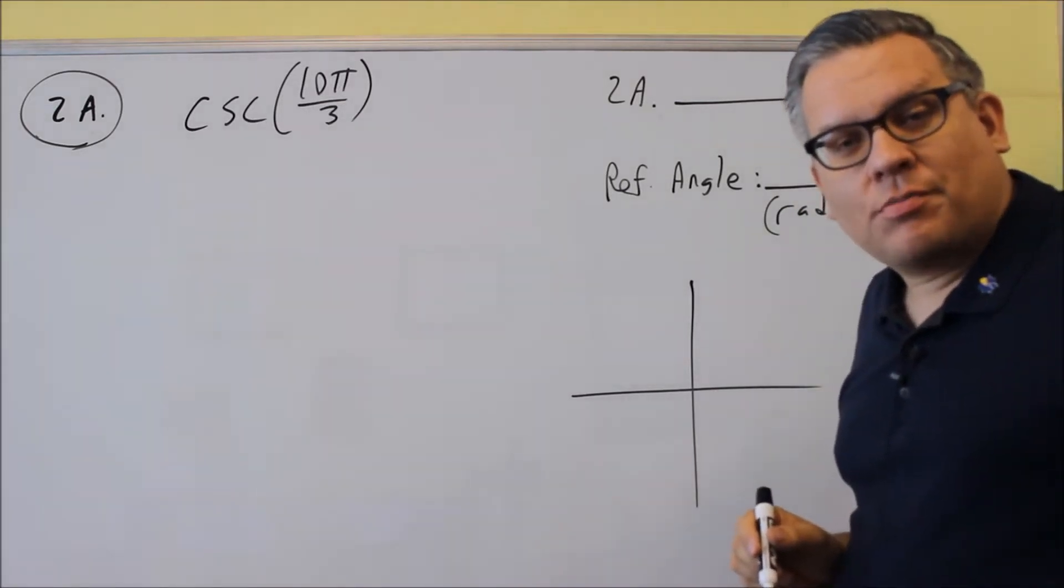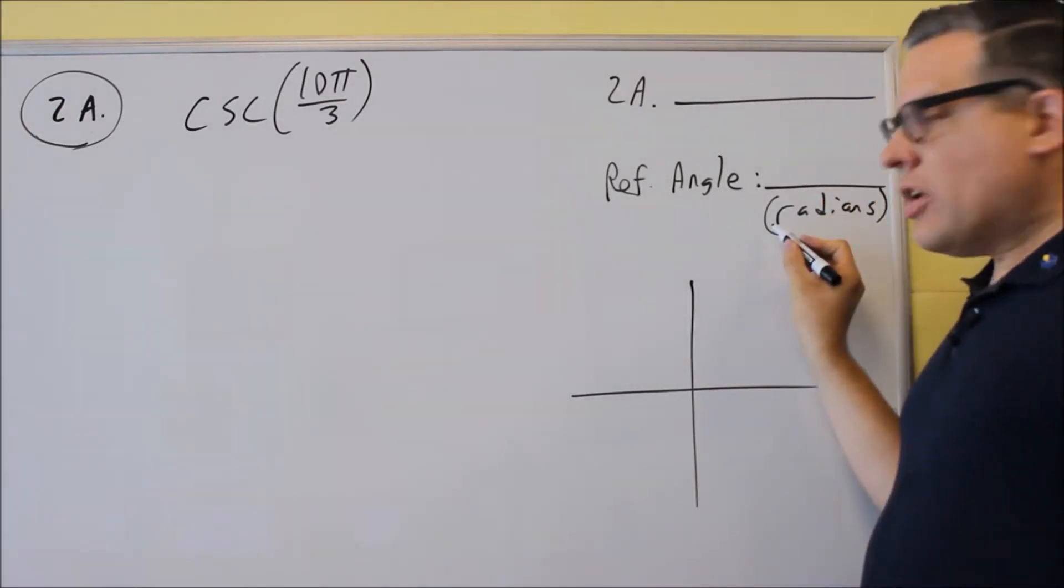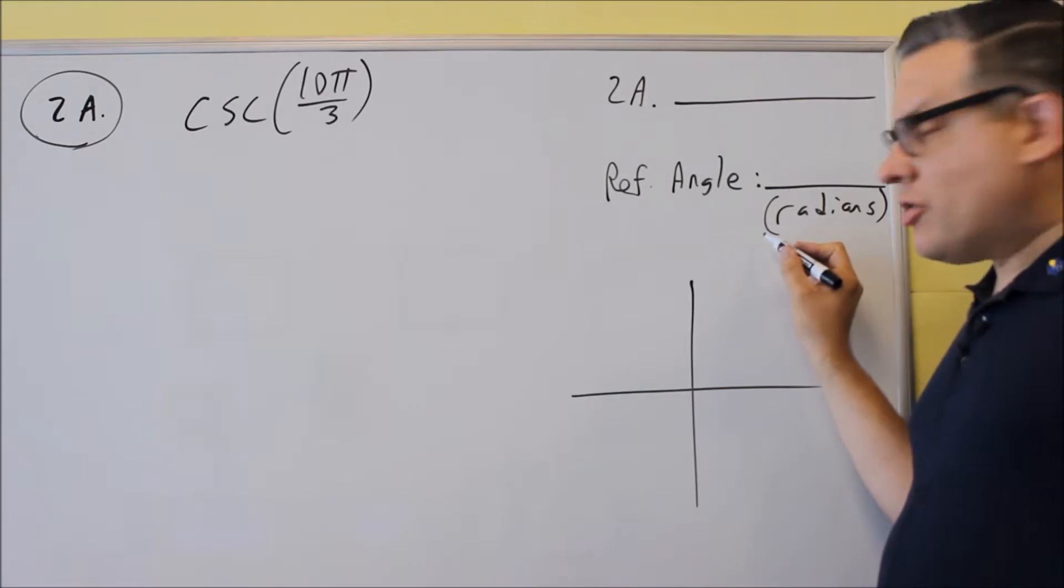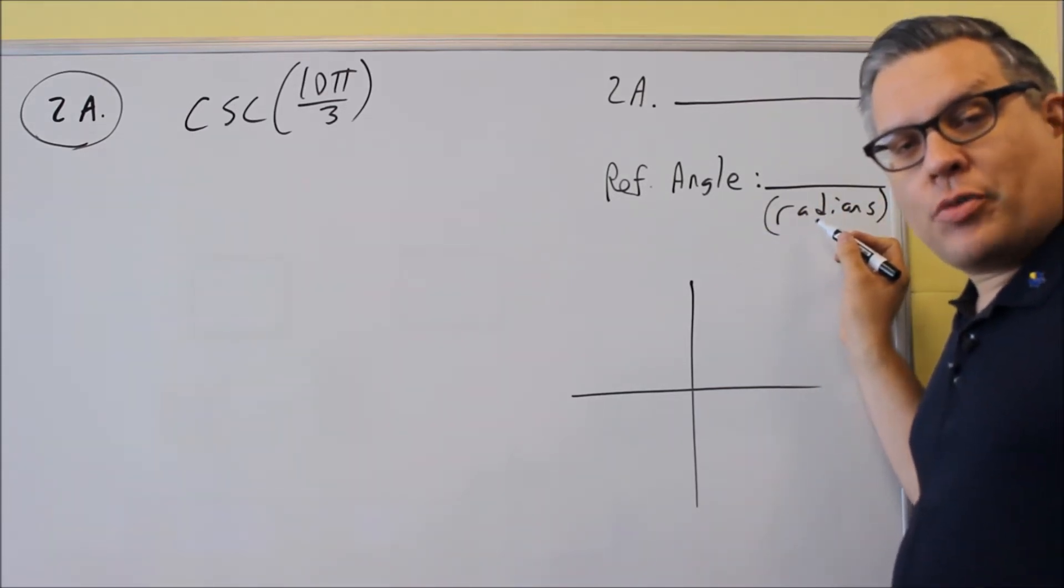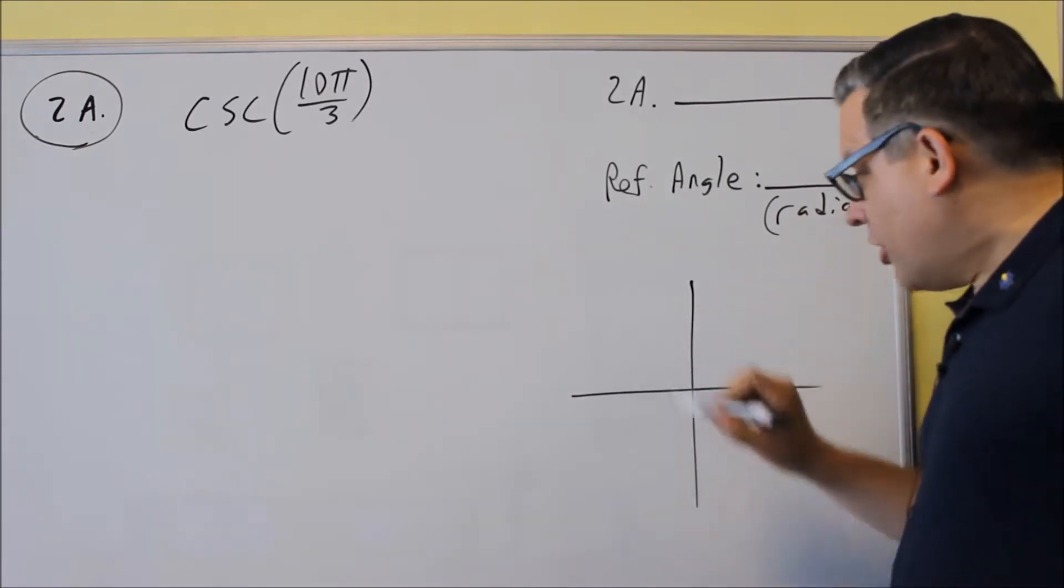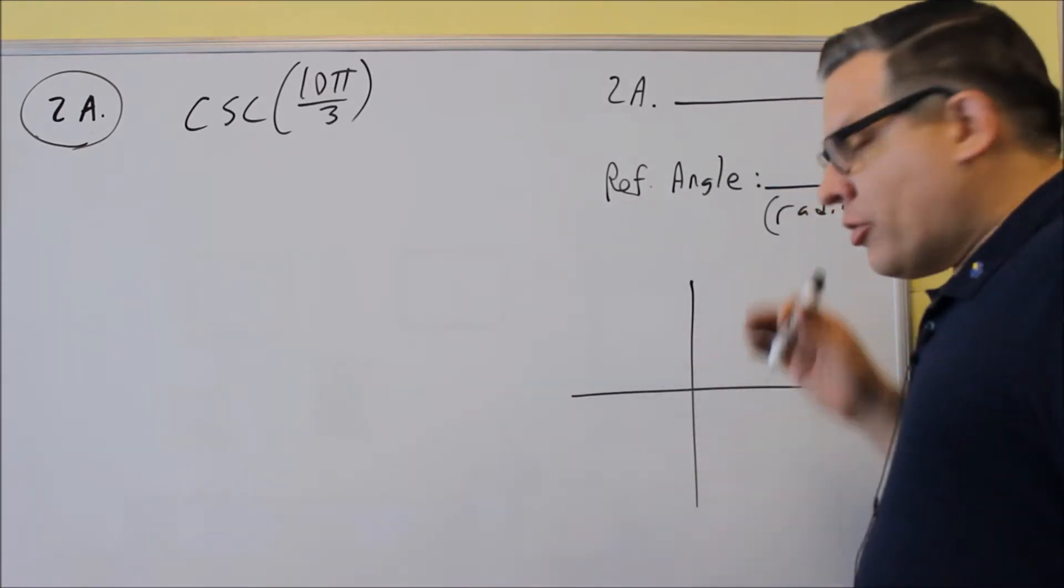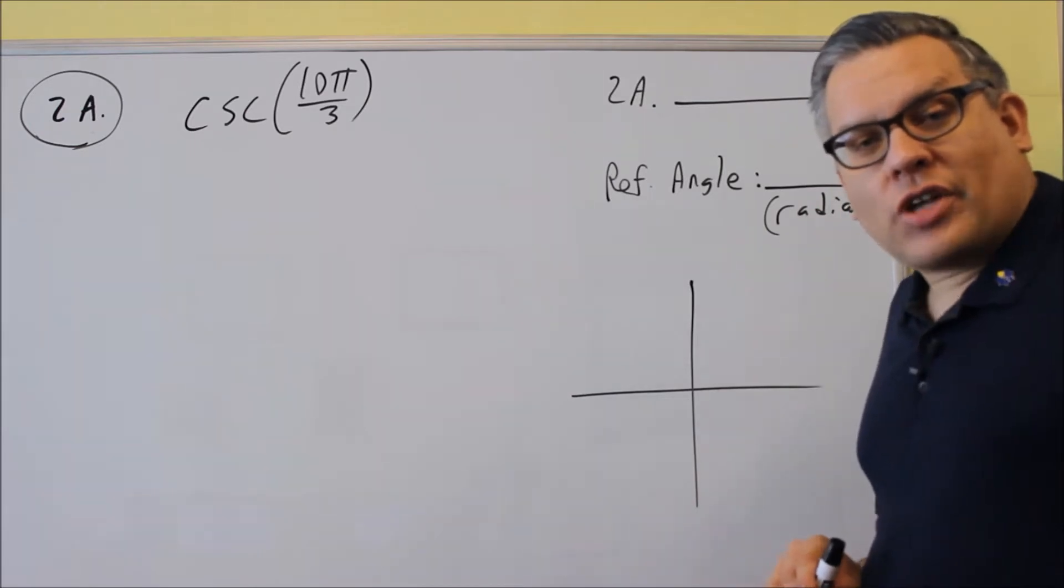Next one, we're going to do reference angle, and it didn't say that on the sample, but on the actual test it'll say something like this. It'll tell you what unit to put that in, whether radians or degrees. And then down below here is a place where you can draw the angle in standard position.